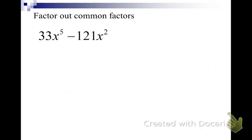Is there any other part of a common factor? Well, I don't know. It looks like there is. It looks like there's a number that will factor out. And of course, that number is going to be 11. So we factor out the common factor, 11 and x squared, and we're left with 3x cubed minus 11 in the parentheses.